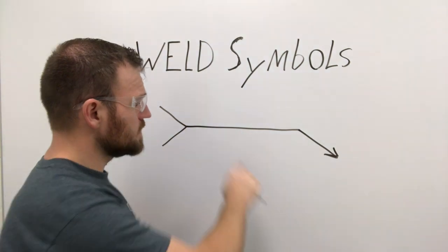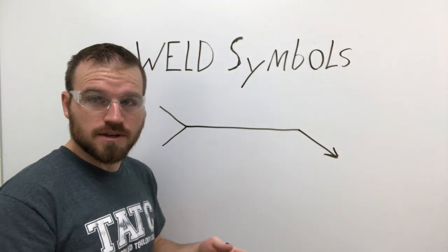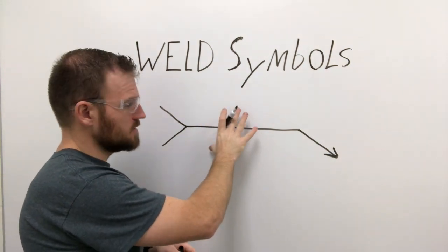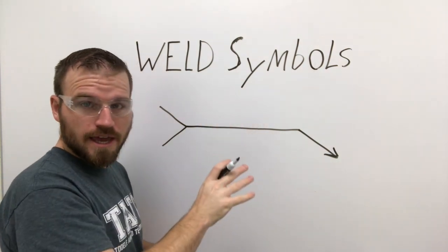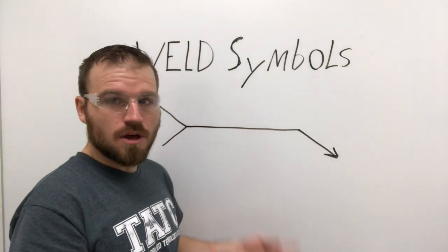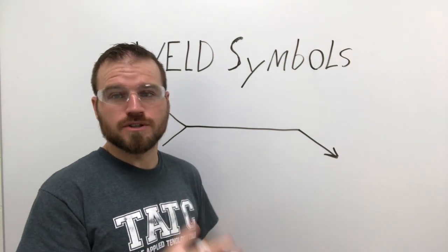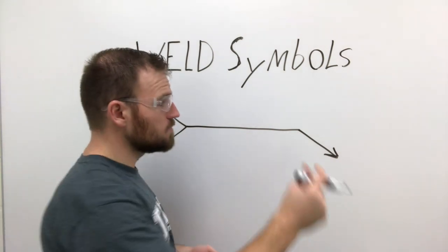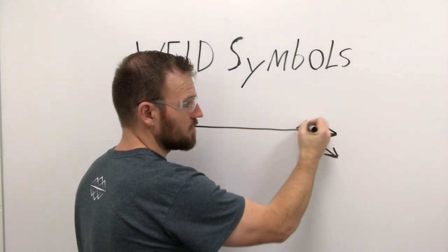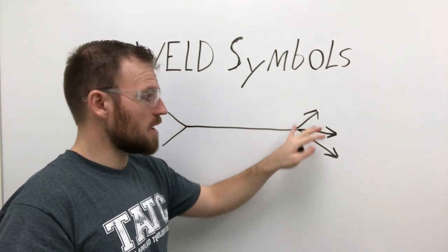The reference line will indicate what kind of weld you need to make. There's going to be different smaller symbols on top of this symbol, and I'm going to go over those in a second. The arrow will indicate where the weld will be located. Typically, this will be pointing at a joint or a junction of some sort. It is possible to see arrows come off multiple times - it might have three of these - but it does not change anything no matter how many arrows you have.